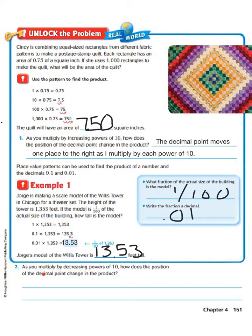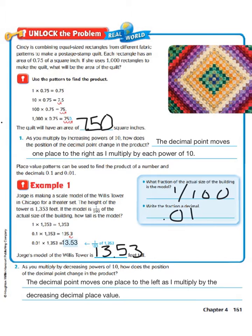As you multiply by decreasing powers of ten, how does the position of the decimal point change in the product? Well, we notice that the opposite applies. Whereas when you multiply by increasing powers of ten the decimal point moves one place to the right, when you're multiplying by decreasing powers of ten, the decimal point moves one place to the left with each decreasing decimal place value.